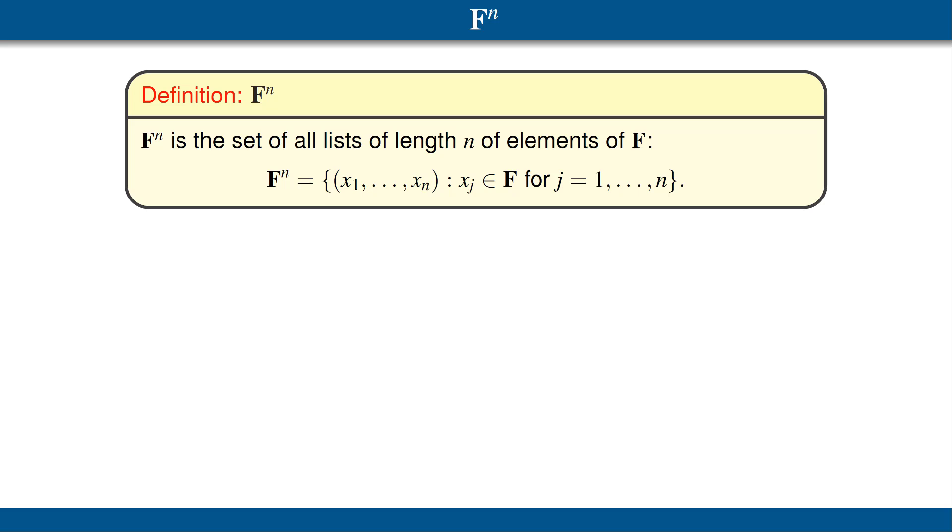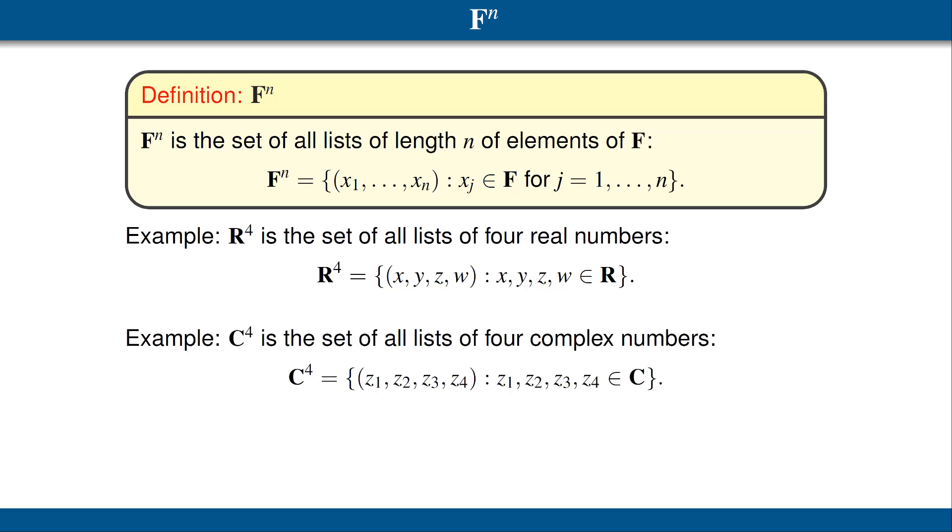Now we define F^n to be the set of all lists of length n of elements of F. If F equals R and n equals 2 or 3, then this agrees with our previous definition of R² and R³. But our definition of F^n makes sense for larger values of n. For example, R⁴ is the set of all lists of 4 real numbers. As another example, C⁴ is the set of all lists of 4 complex numbers.